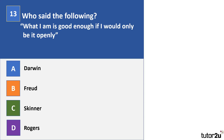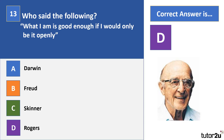Question 13: who said the following? 'What I am is good enough, if I would only be it openly.' Options: Darwin, Freud, Skinner, or Rogers. The correct answer is D — Rogers. This is a very humanistic statement, discussing the interaction between the ideal self and the actual self, and the incongruence between the two. 'Being it openly' refers to those two parts of the self coming together in congruence.